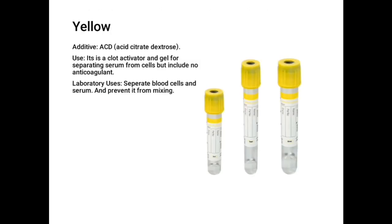Let's begin by considering a yellow tube. A yellow tube has an additive known as acid citrate dextrose, which is a clot activator and gel for separating serum from cells, but it doesn't have any anticoagulant. An anticoagulant is an additive that prevents blood from clotting, but this tube has a clotting activator.